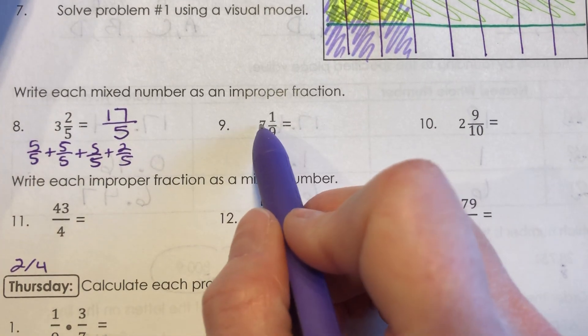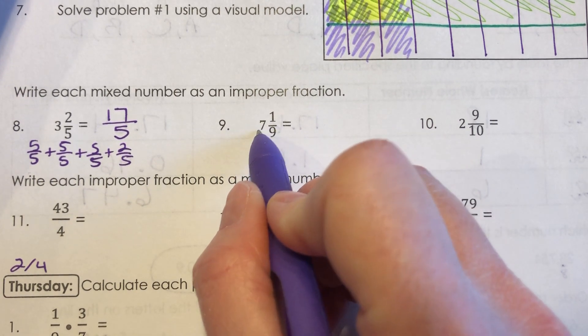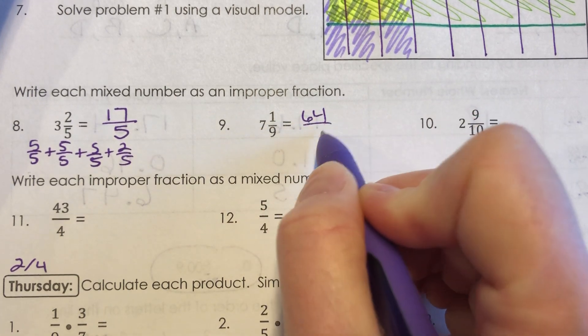Okay. Number 9. So I'm going to have 9 ninths, 7 times. That means I can do 9 times 7, which is 63, plus 1 is 64 ninths.